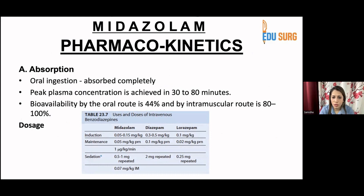There are various doses depending on your indication for giving the drug. For induction, use 0.05 to 0.15 milligram per kilogram. For maintenance, whether in an infusion or intermittent boluses, you can give 0.05 milligram per kilogram or 1 microgram per kilogram per minute. For sedation, you can use 0.5 to 1 milligram in repeated doses, or intramuscularly 0.07 milligram per kilogram.